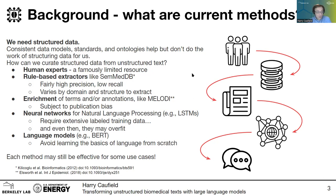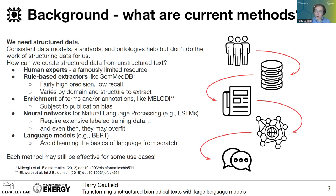More recently, there have been a number of applications of neural networks like LSTMs in natural language processing, and specifically this problem of biomedical information extraction. But they have often required really extensive labeled training data. And even then, the kind of data you're using may actually be overfit for your particular problem and may not represent the broader variety available in biology and biomedicine.